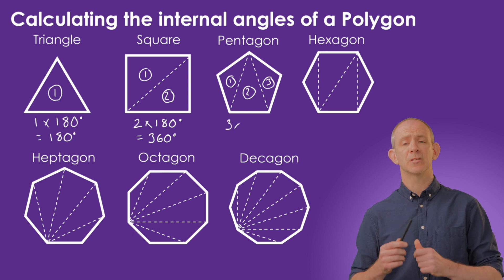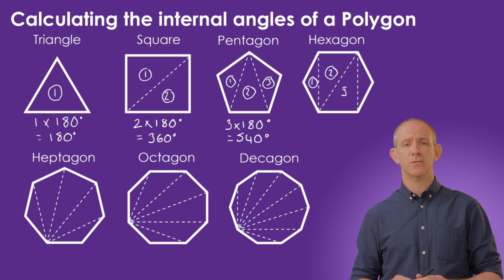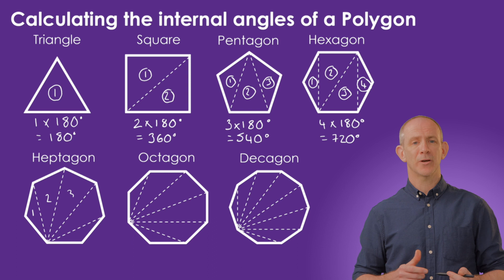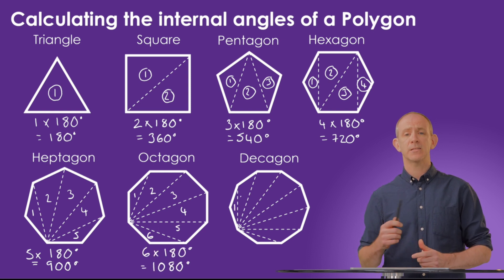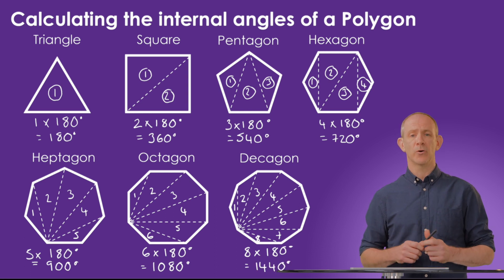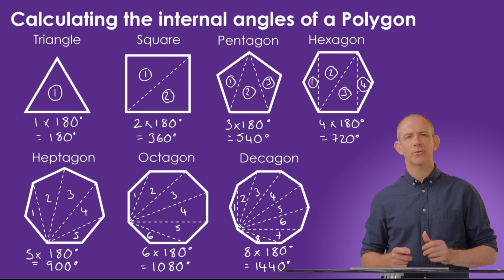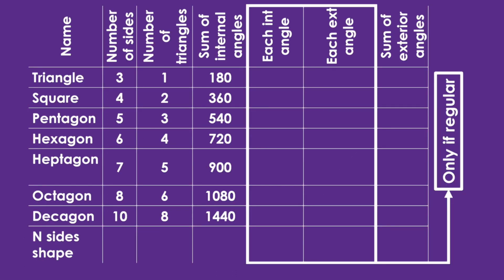A pentagon splits into a minimum of 3 triangles, giving 540 degrees. A hexagon takes 4 triangles, a heptagon takes 5, an octagon takes 6 triangles giving 1080 degrees, and a decagon (10 sides) takes 8 triangles giving 1440 degrees. We can now create the formula: if we use n for the number of sides, the number of triangles is always 2 less than the number of sides. So the formula for the sum of interior angles of any polygon, regular or irregular, is (n − 2) × 180.